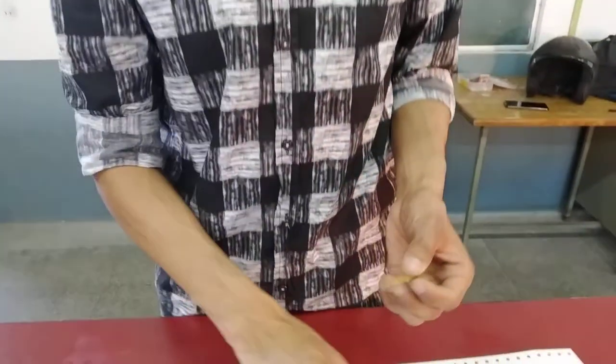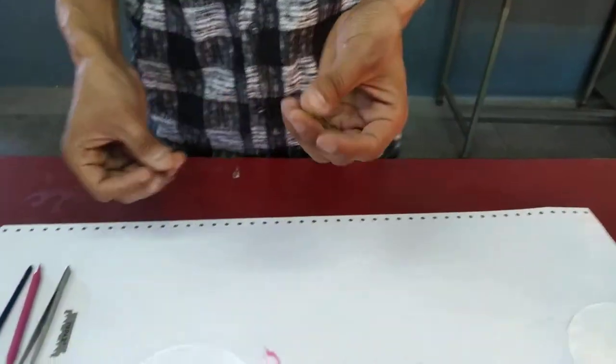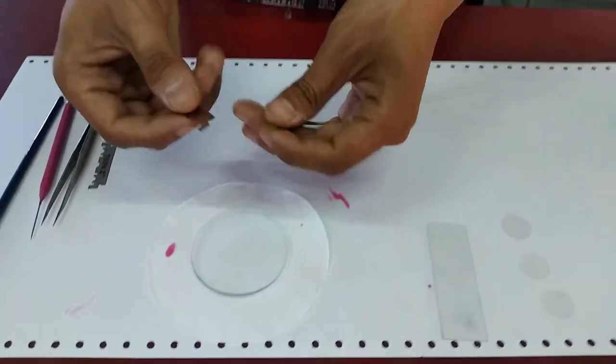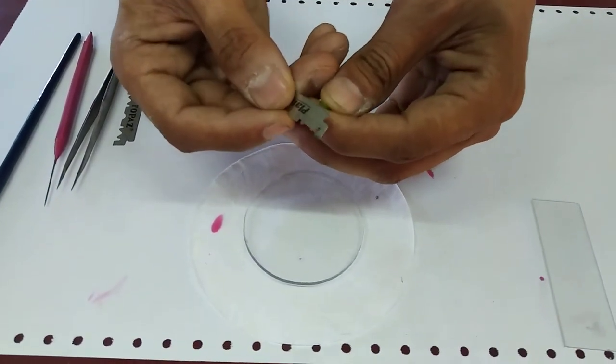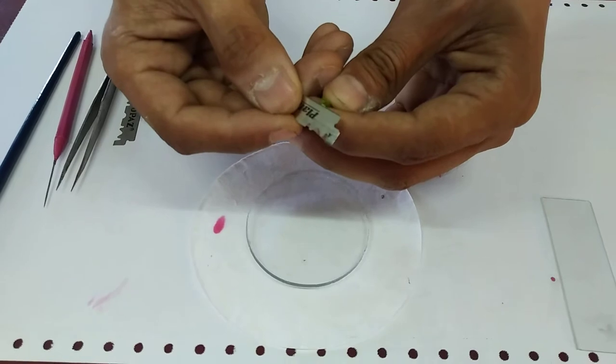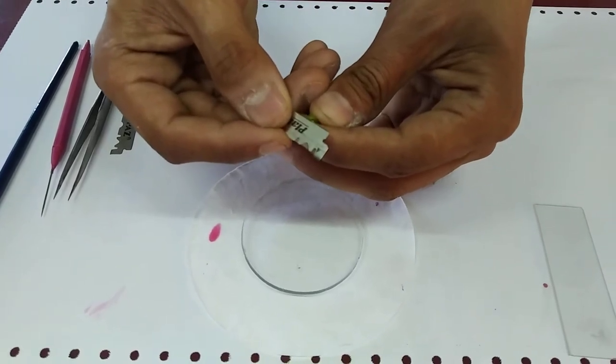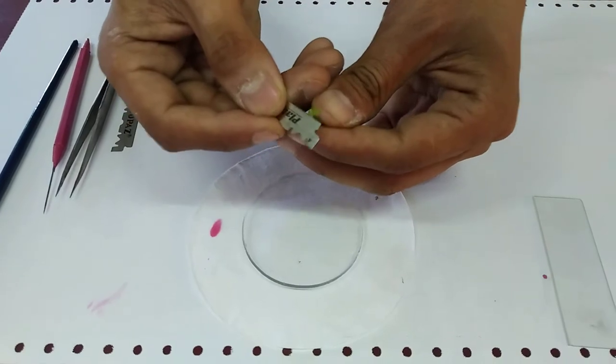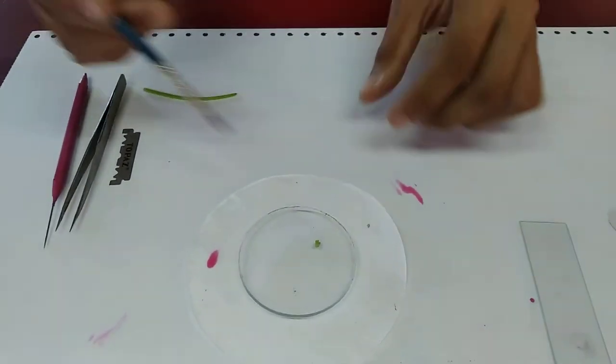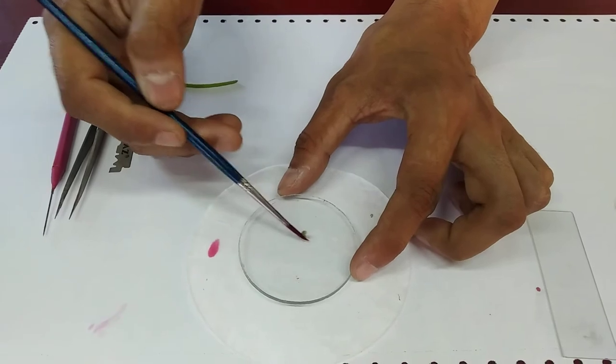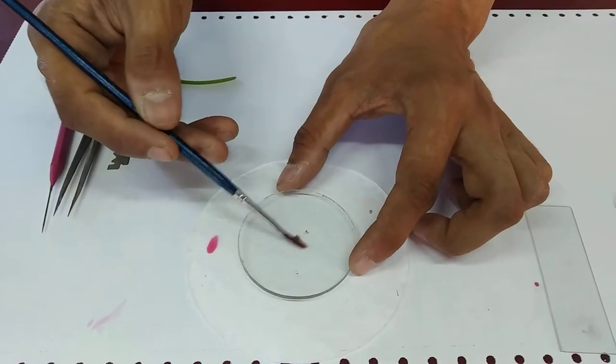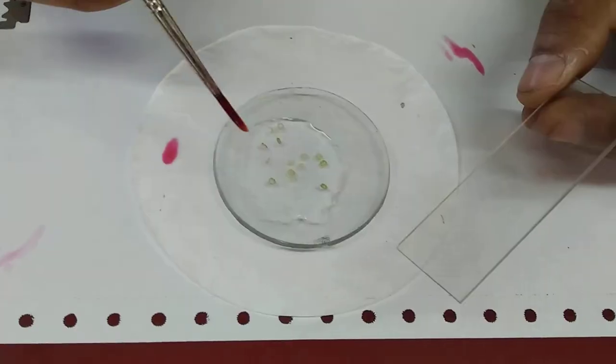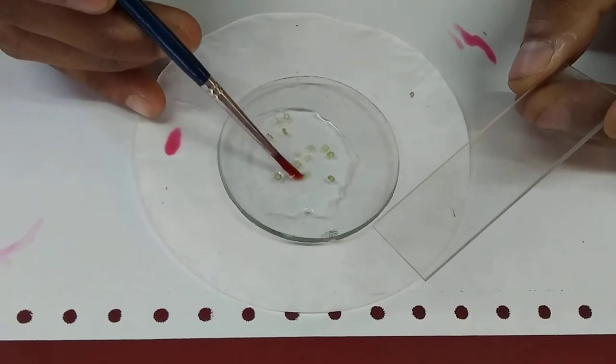Continuing with the same experiment, the next specimen is a dicot stem. Cut many sections of the specimen, transfer them to a glass slide, and spread them out with a brush.